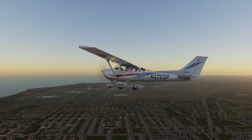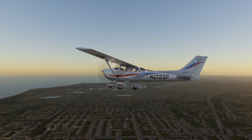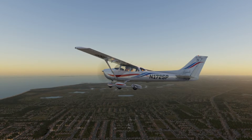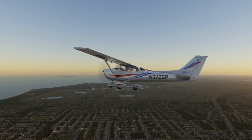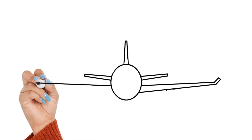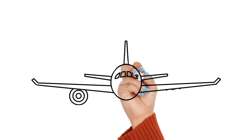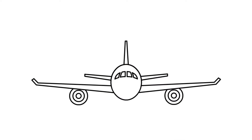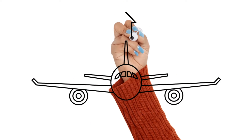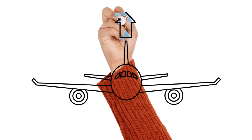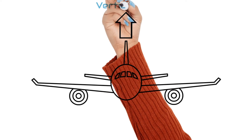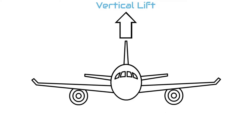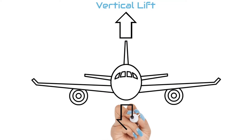In our aircraft, centrifugal force is experienced as a sensation of being pushed outward when turning. As we discussed in previous videos, anytime you are in straight and level flight, the lift produced goes straight up — this is called vertical lift. This means that in order to stay flying straight and level, we only need to produce enough lift to equal the weight of the airplane.